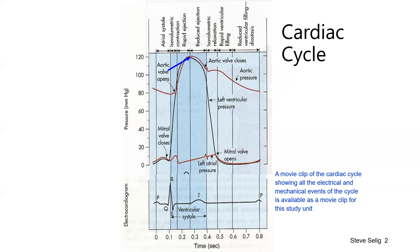The ventricle continues to contract and eject blood, reaching a zenith known as systolic pressure — in this case about 120 millimeters of mercury. At this point, the T wave commences, representing the beginning of ventricular relaxation. As the ventricle relaxes, it also starts to run out of blood. These two factors cause pressure to drop precipitously, giving us the reduced ejection phase, coinciding with both electrical and mechanical relaxation.